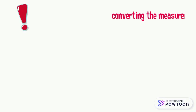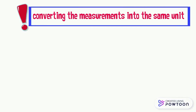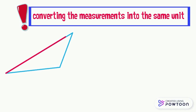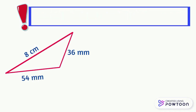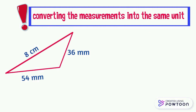Please note that before calculating the perimeter, it is necessary to convert the measurements of the sides into the same unit of measurement. For example, we want to find the perimeter of this triangle. The length of the first side is 8 centimeters, the second side is 36 millimeters, and the third is 54 millimeters. First you need to convert the unit of measurements of all the sides to the same unit — here we want to convert to millimeters. We know that 1 centimeter equals 10 millimeters, so 8 centimeters equals 80 millimeters.